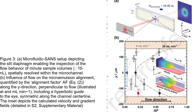The microfluidic SANS setup is depicted along with the influence of flow on the microemulsion alignment. The alignment factor (AF), which quantifies the degree of anisotropy, increases with flow rate at all positions. The hyperbolic shape of the AF profile indicates that the structure evolves from near isotropic at the center to increasingly anisotropic near the walls. The collapse of all AF data onto a master curve when plotted as a function of the median velocity gradient confirms the alignment of lamellar membranes parallel to the flow direction and normal to the velocity gradient vector.